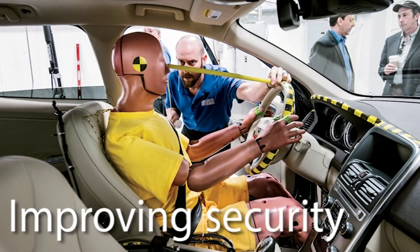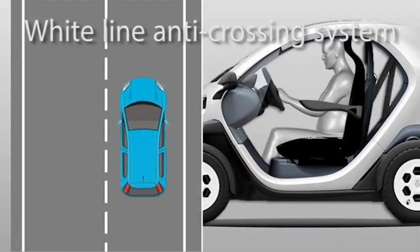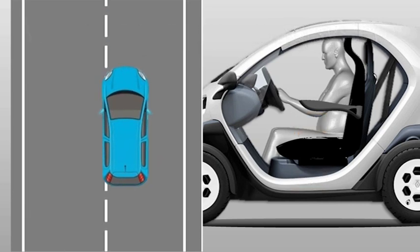The purpose of a car seat is also to improve security. The white line anti-crossing system makes the seat vibrate when the car crosses the white line without warning lights.